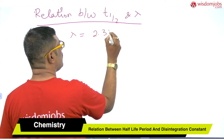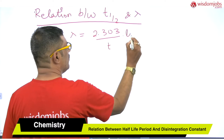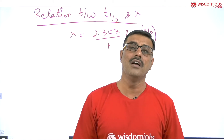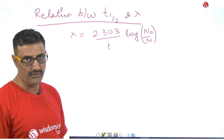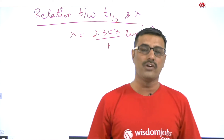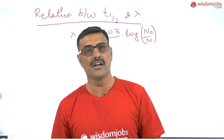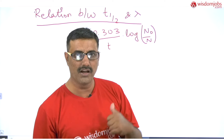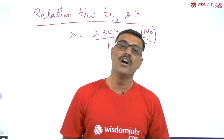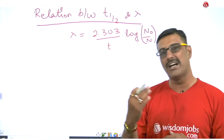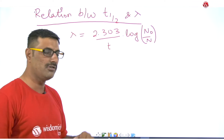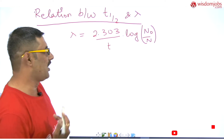The expression is: lambda equals 2.303 divided by t, into log of N-naught upon N. The different parameters are: lambda is the disintegration constant or decay constant, t is the time taken for that particular decay, N-naught is the initial value at t equal to zero — the number of atoms of the radioactive element present initially — and N is the number of atoms present after a time t.